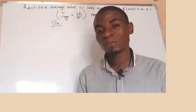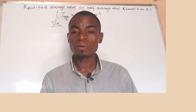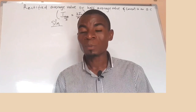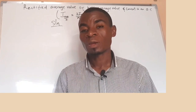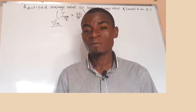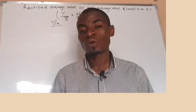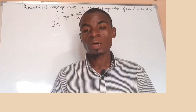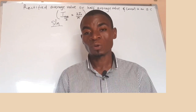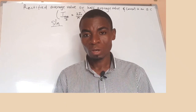In case this is your first time watching this video, you can click on the subscribe button so that next time we should meet on the topic of RMS — the root mean square value of current — being equal to 0.707 I₀.